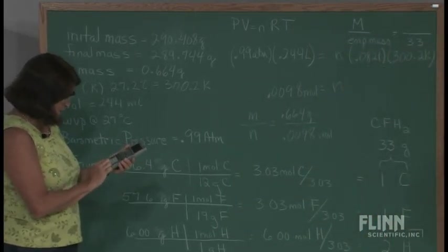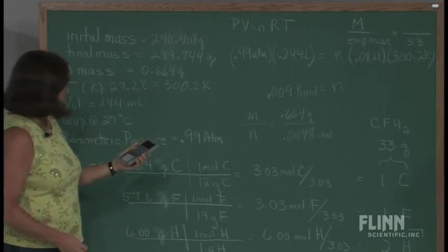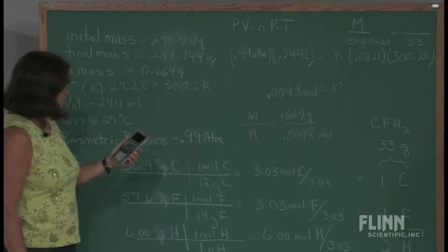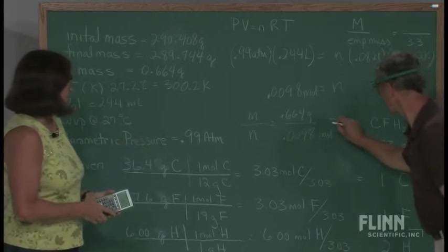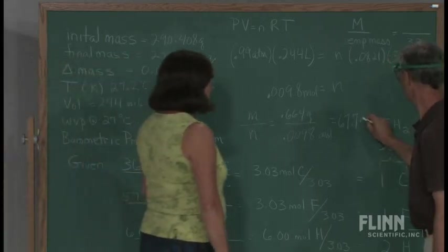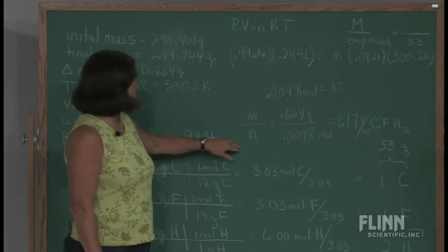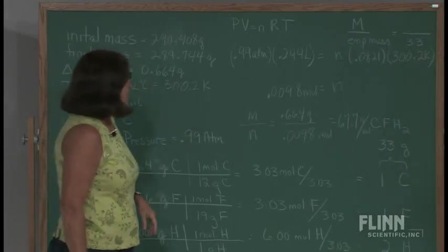I'm going to just pull up that answer. And I get, for my value, 67.7 grams per mole. Mass over moles, grams per mole. That's my molar mass.